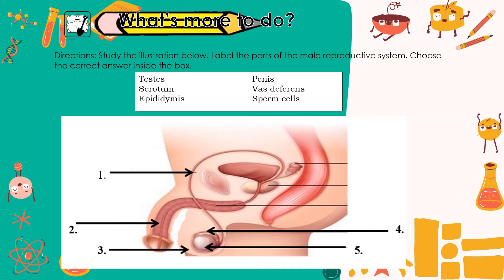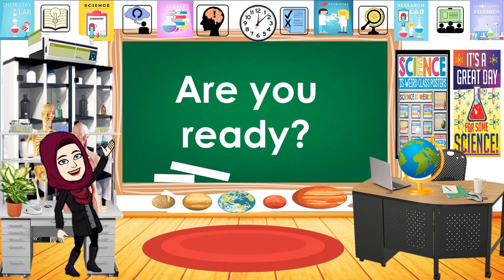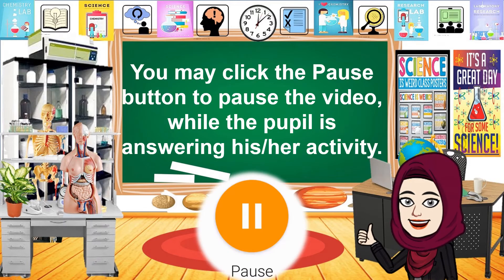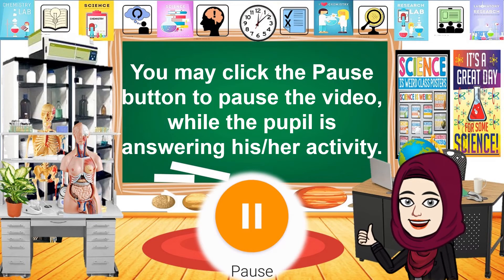Now let's answer what's more to do. Directions: Study the illustration below. Label the parts of the male reproductive system. Choose the correct answer inside the box. Write your answer in your answer sheet. I'm giving you 1 minute to answer the activity.